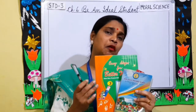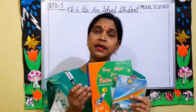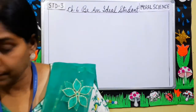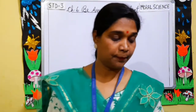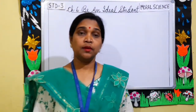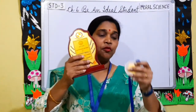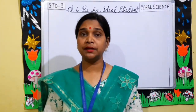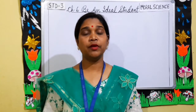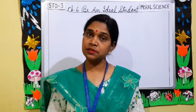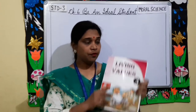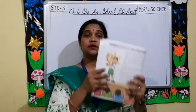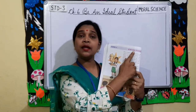Now tell me, who makes use of all these items? These things are used by a student. Here I have a trophy and a medal, and these things are awarded to an ideal student. So we are going to do 'Be an Ideal Student' — Living Values Book 3, Chapter 6.